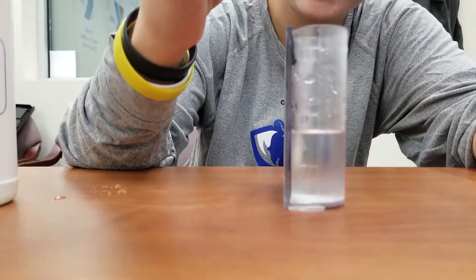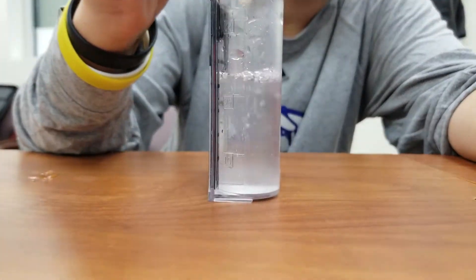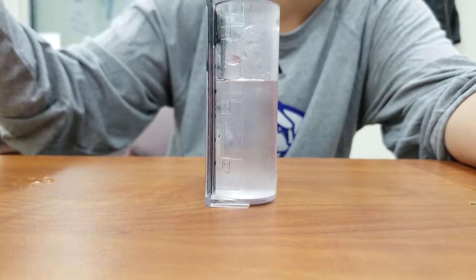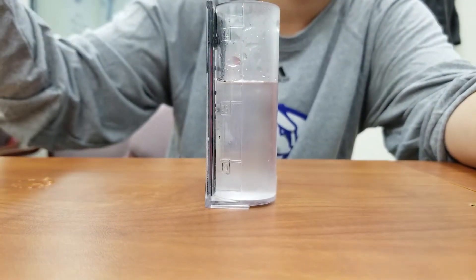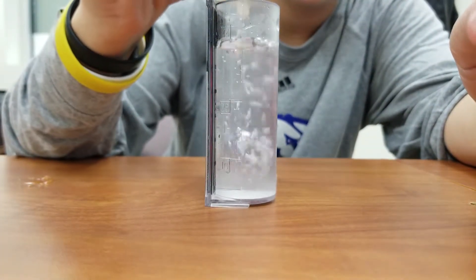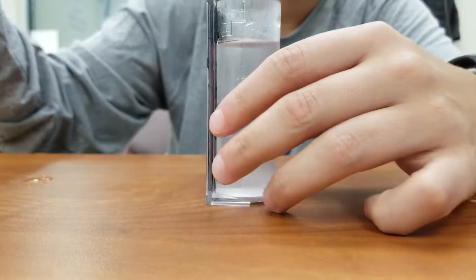This is our pH test. We're going to fill the tube up to the 44 mark and use the bottom line of the bubble to make sure it's lined up.